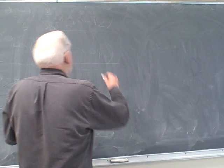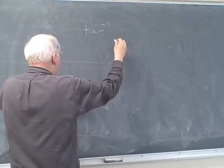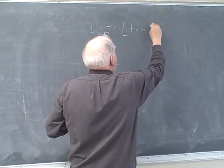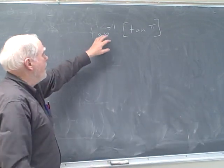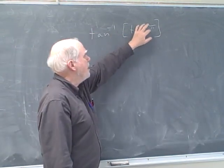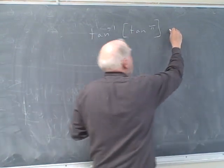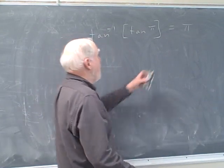And that is the tangent inverse of the tangent of pi. And you might say, oh, I know this. We know that the inverse function negates the function, therefore I have to get pi. But it's very tempting to write that, but it's not true, and here's why.